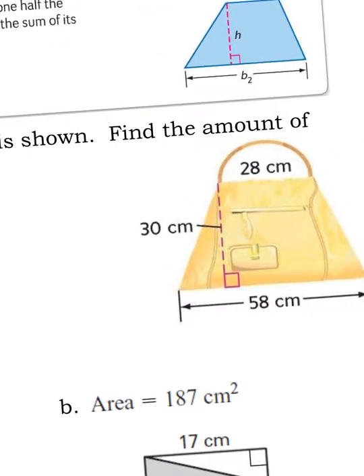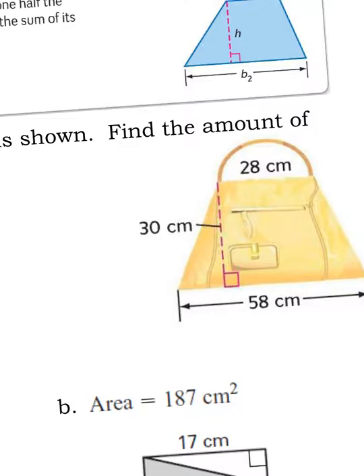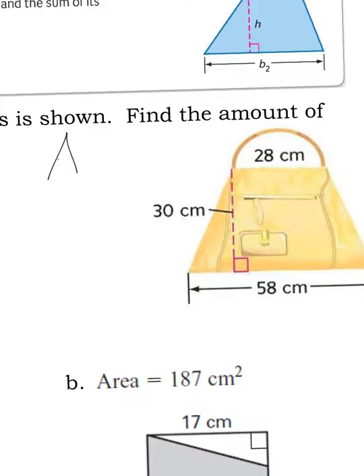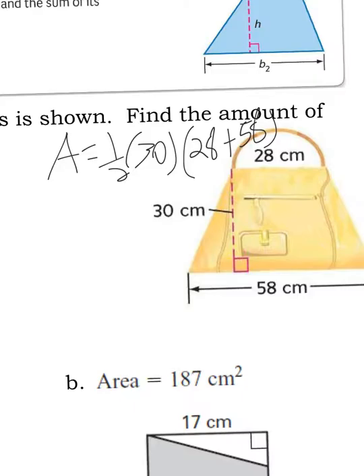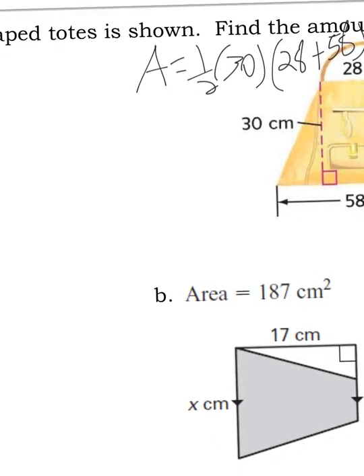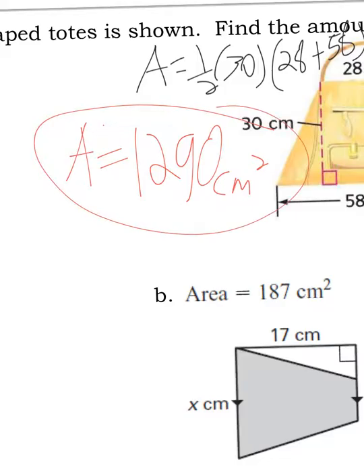Here I have a trapezoid-shaped purse, and I'm trying to figure out the area of that. So I have one half from the formula, I have a height of 30, and then I have base 1 of 28 and base 2 of 58. I can just type all that into the calculator, and I'll get an area of 1290 centimeters squared. That's all there is to it—30 was my height, base 1, base 2, pretty straightforward example.